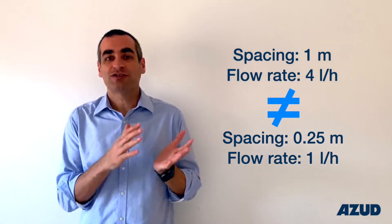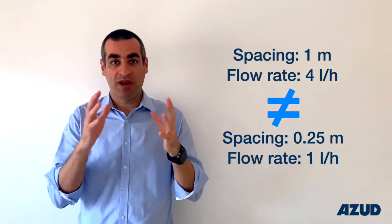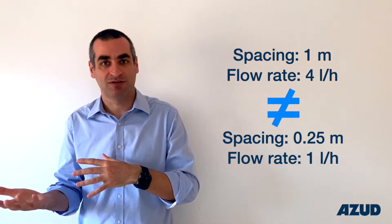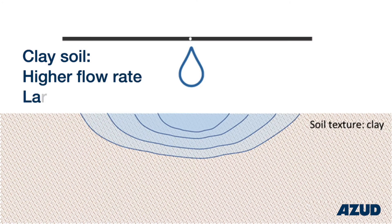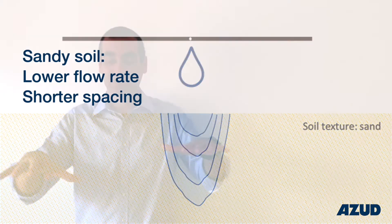When should you go for big flow rate and big spacing, or vice versa? If your soil is a clay soil, you can use bigger flow rate and bigger spacing. But if you have a sandy soil, I would recommend you to reduce the spacing and reduce the flow rate, to have a better distribution of the water on the soil.